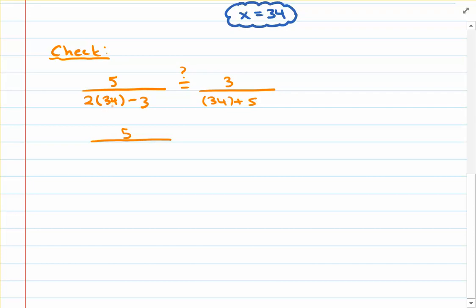Anyway, according to the order of operations, what we'll have to do is multiply 2 and 34 together. So 2 times 34 is 68. We still have to subtract 3.